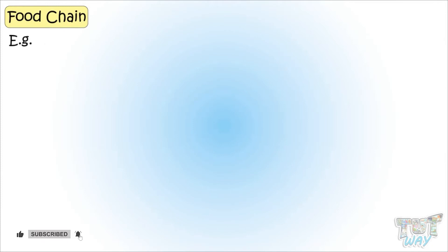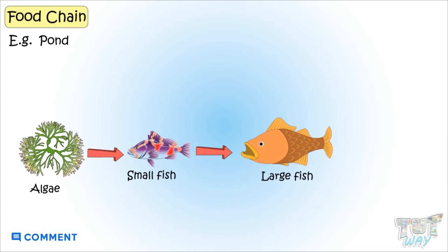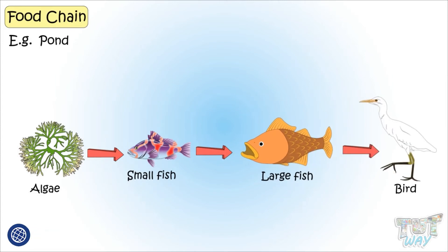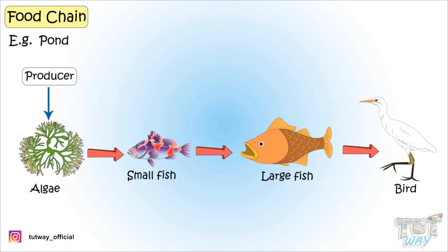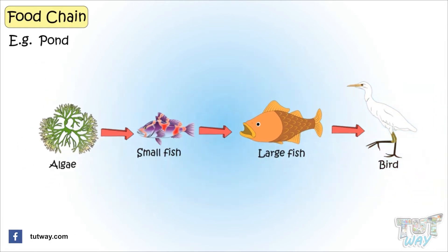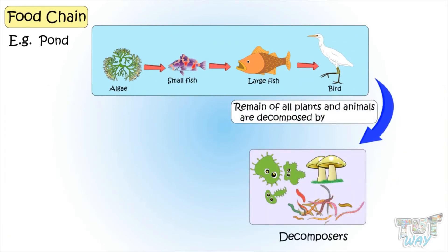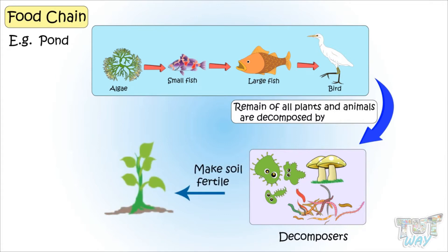Let's see examples of such food chains. Here we have a small food chain from a pond. First of all, algae is eaten by small fish. Small fish is eaten by larger fish. And larger fish is eaten by swans or eagles. In this food chain, algae is a producer — the rest are all consumers. And when all these organisms die, decomposers will decompose them and again convert them into nutrients, which will again make the soil fertile.